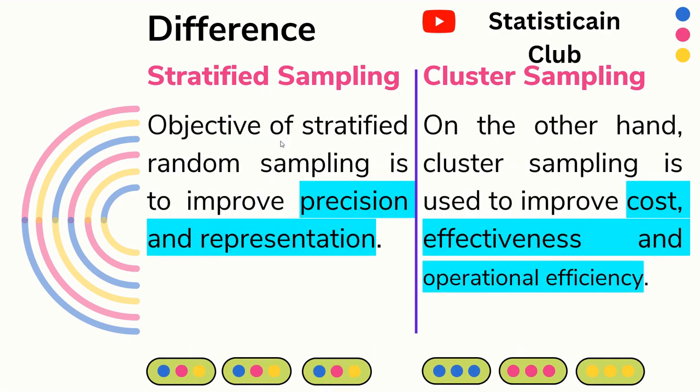The objective of stratified random sampling is to improve precision and representation. On the other hand, cluster sampling is used to improve cost effectiveness and operational efficiency. Cluster sampling is mostly applied to geographical areas — we select clusters according to geographical areas, and our cost is minimized because we perform sampling within that one cluster, which also increases operational effectiveness.